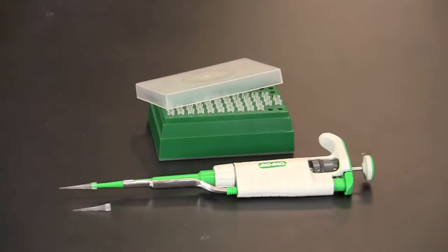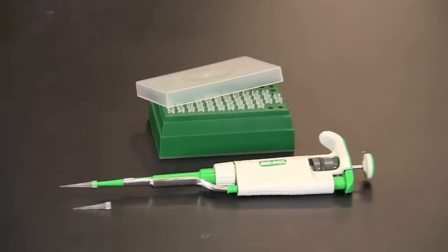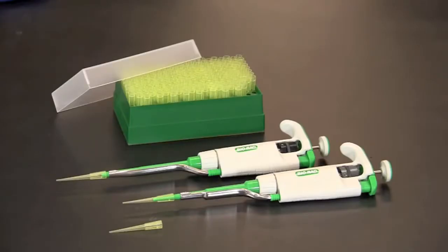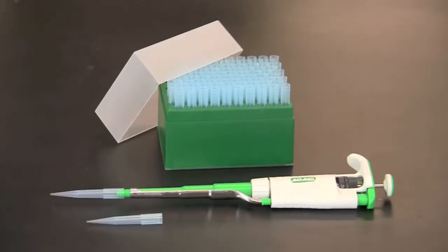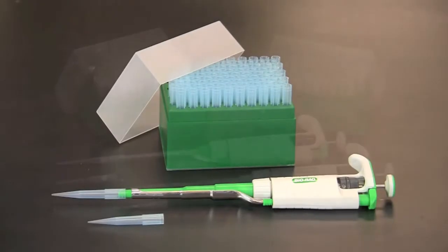The first step in using a micropipette is to make certain you are using the correct size and type of tip for the samples you will be transferring. Tips for general pipetting come in three standard sizes: the 0.5 to 10 microliter shown here, tips that fit either a 2 to 20 microliter or a 20 to 200 microliter pipette, and tips that fit 100 to 1000 microliter pipettes.